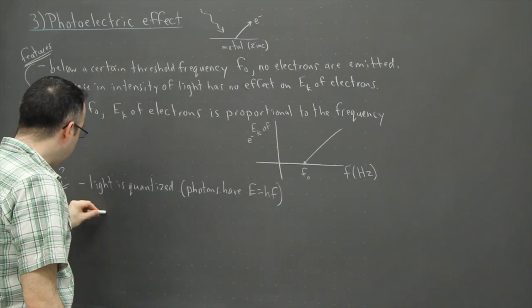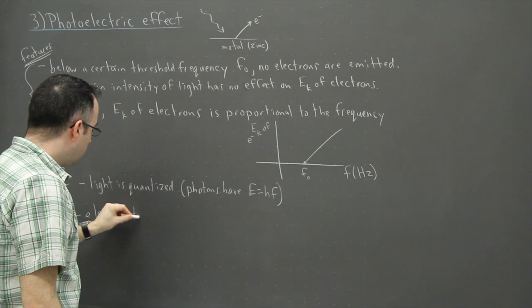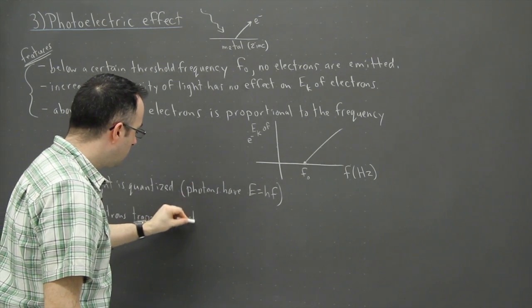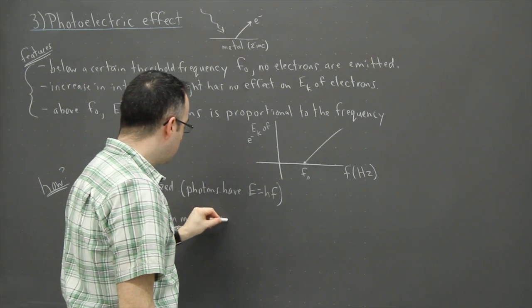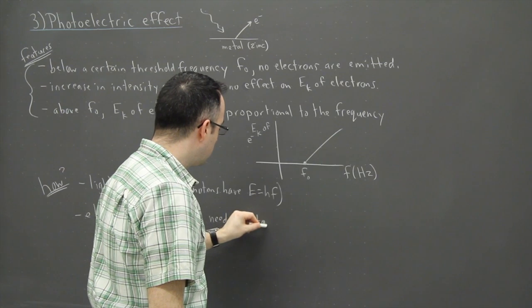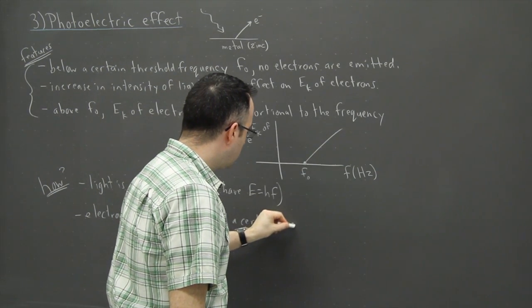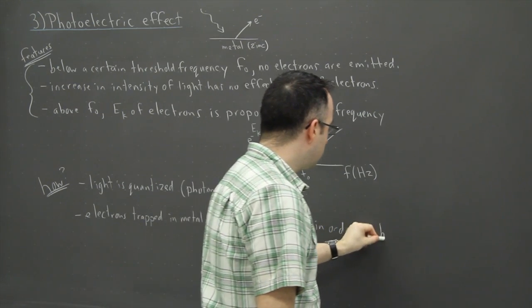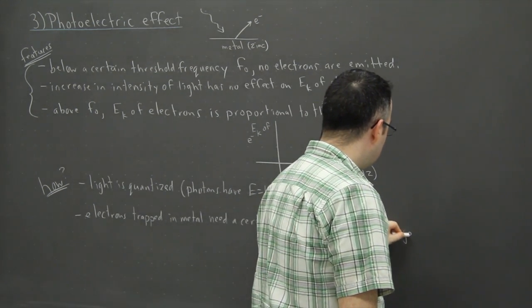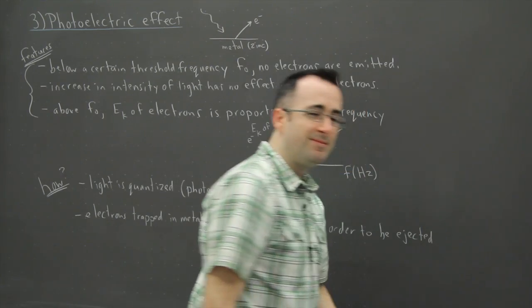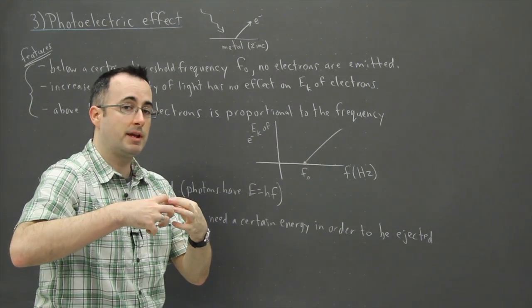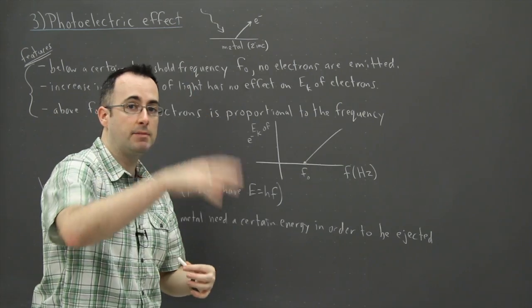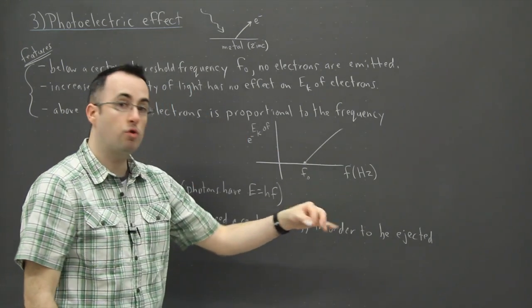Now the electrons that are trapped in the metal, so in this case in the zinc, they need a certain energy in order to be ejected. Okay, so what this tells you is that the metal is sort of like holding on to the electrons and you need to give these electrons enough energy to basically kick them out in order to make that jump. And that is also quantized.